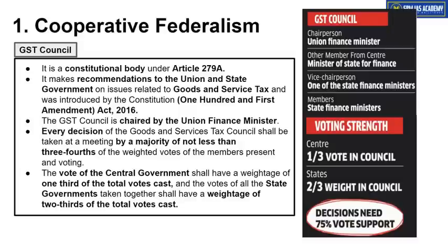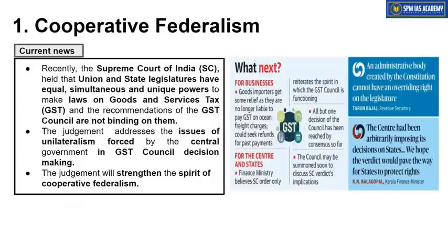So in one way, we can say that the central government has a kind of veto power inside the GST Council. If the central government votes against any resolution, even if all other states vote in its favor, total votes would only reach 66%, falling short of the required 75% threshold. So technically, the central government enjoys a kind of veto power in the GST Council.